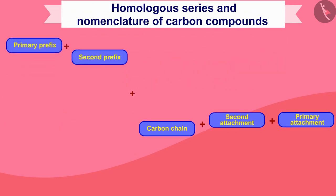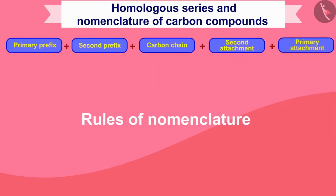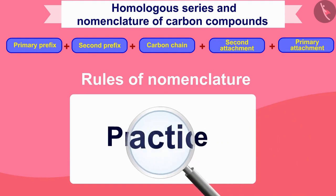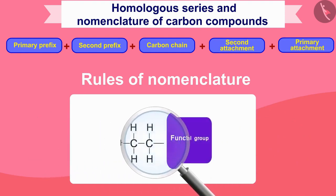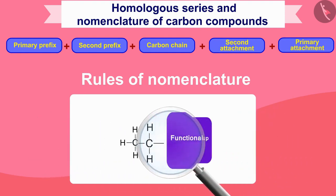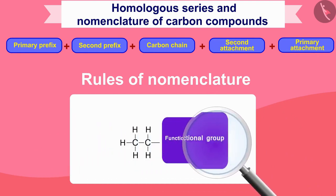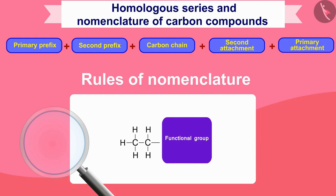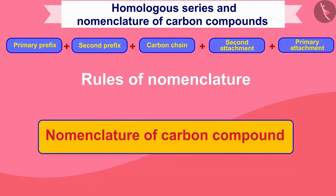Now we will discuss the rules of this nomenclature. But it can be a bit difficult to understand at once, because like mathematics, you will need to practice it. By discussing it through examples, it will start to become easy to understand, and you will be able to name any compound.